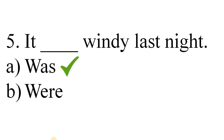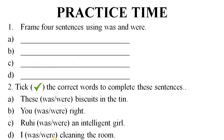So kids, I hope you all have got a clear concept of 'was' and 'were'. Now it's practice time. Question number one: Frame four sentences using 'was' and 'were'. Question number two: Tick the correct words to complete the sentences. That's it for today. We will meet again in the next video. Thank you. Bye bye.